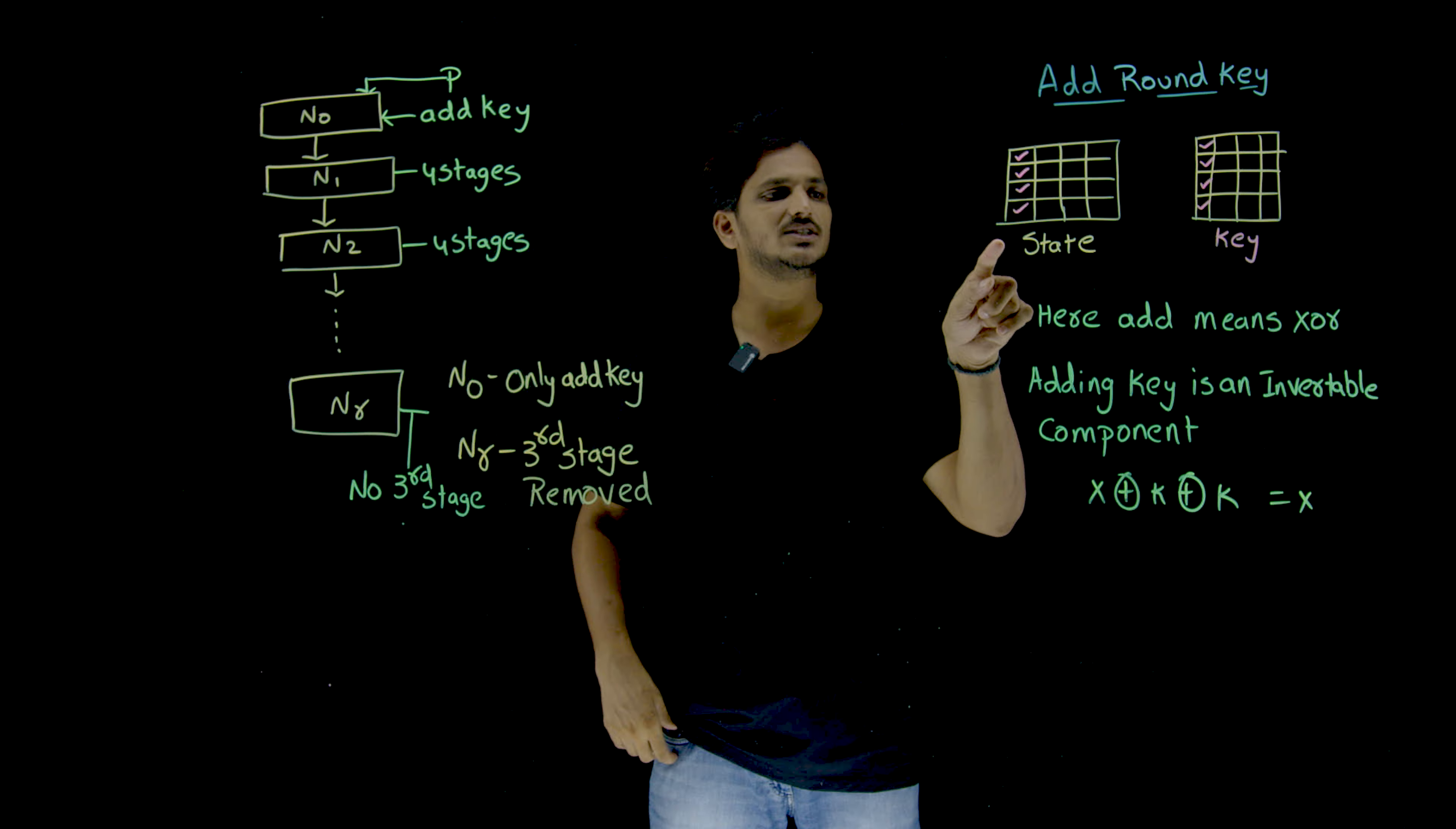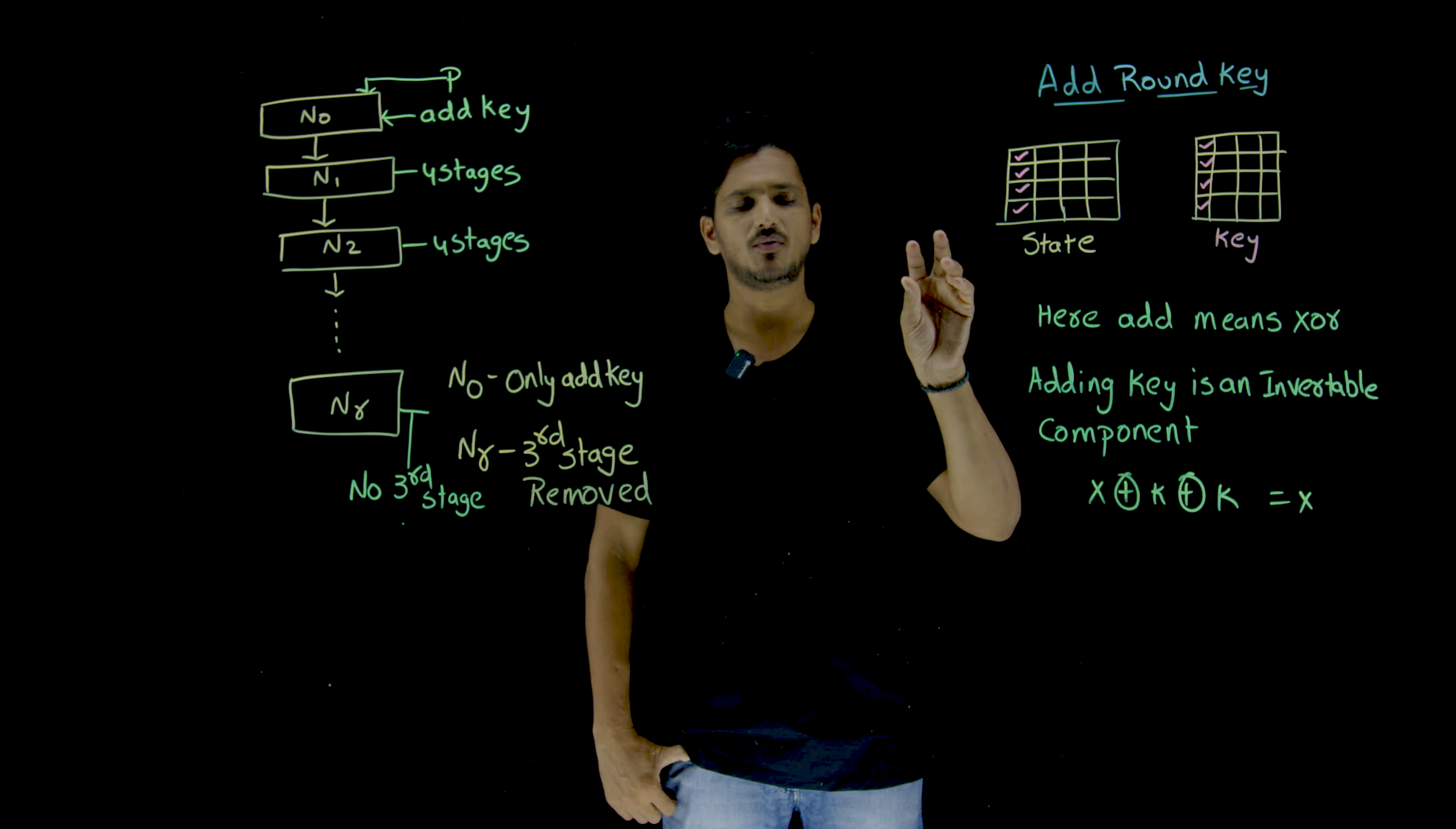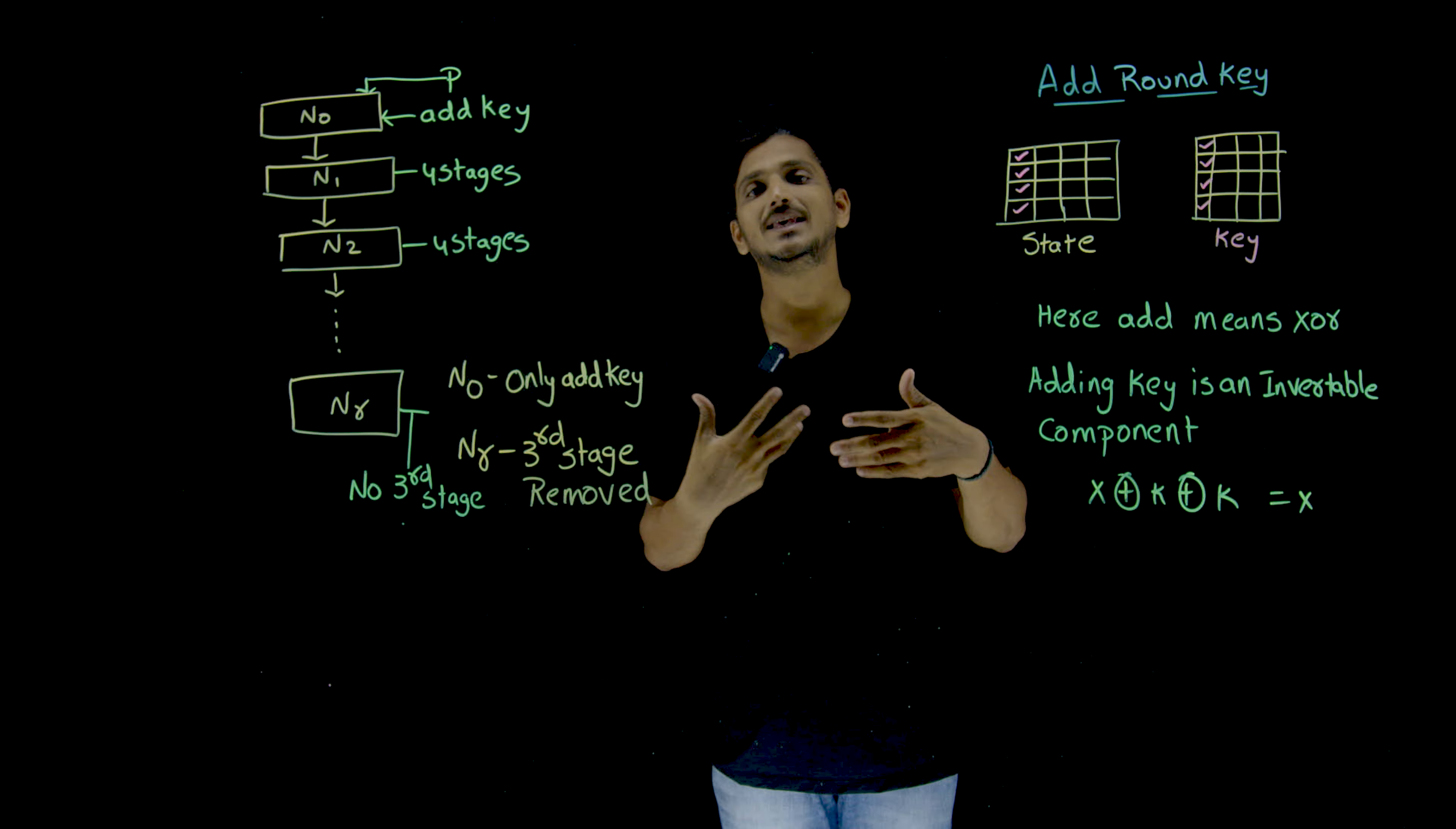So this is the state which we are going to obtain from the third stage. The output which we got from third stage, we take it as a state. State means 128-bit, mentioned in a matrix form. So taking this state and you take 128-bit key, that key is taken in the matrix form. First bit, second bit, third bit, fourth bit, so on. And these two matrices are to be added. That is what happens in adding a key.